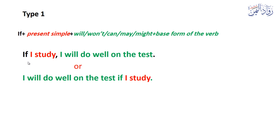Look at this example: 'If I study hard, I will do well on the test.' This is the condition, and this is the result. I am sure that if I study well, I will do well on the test — my grades will be okay. Or: 'I will do well on the test if I study.' So you can change the places of the result and the condition.